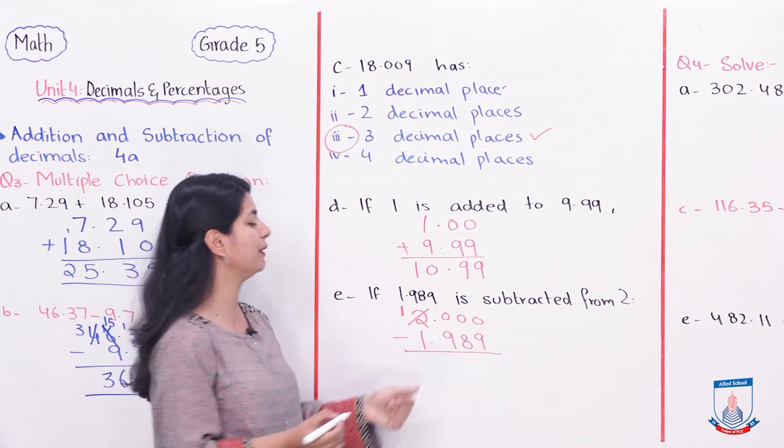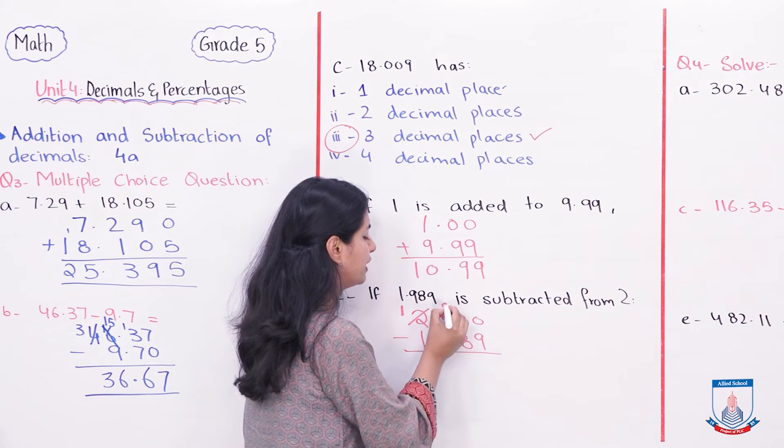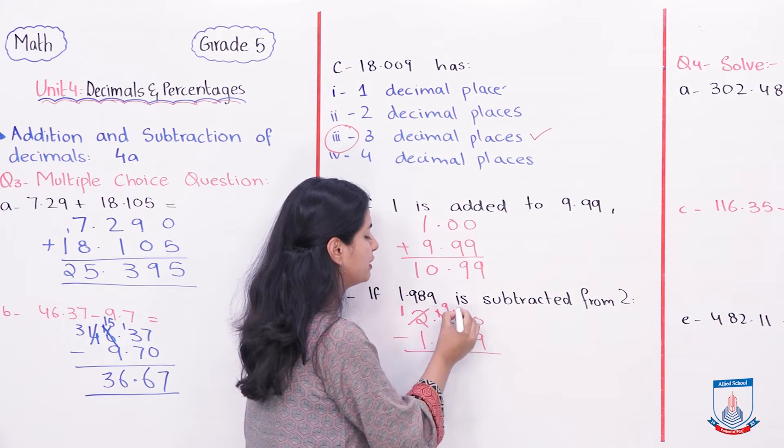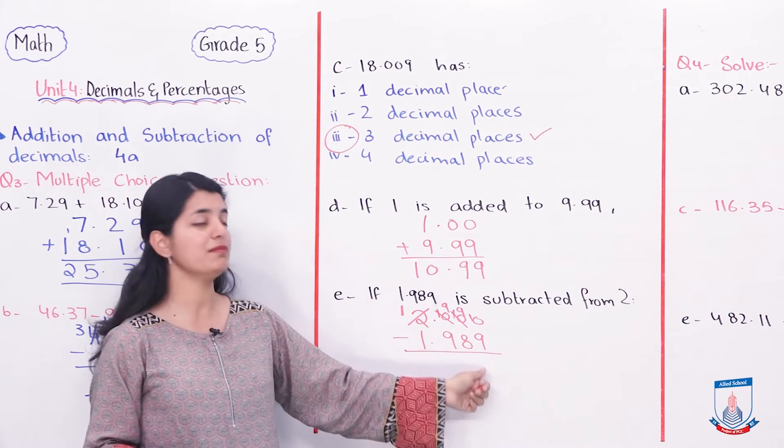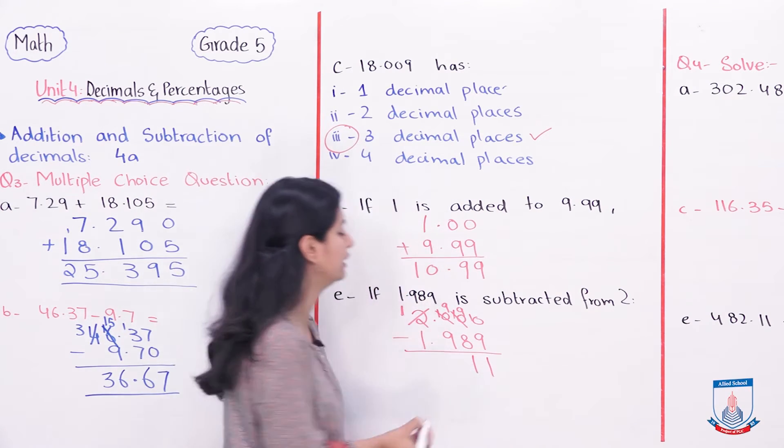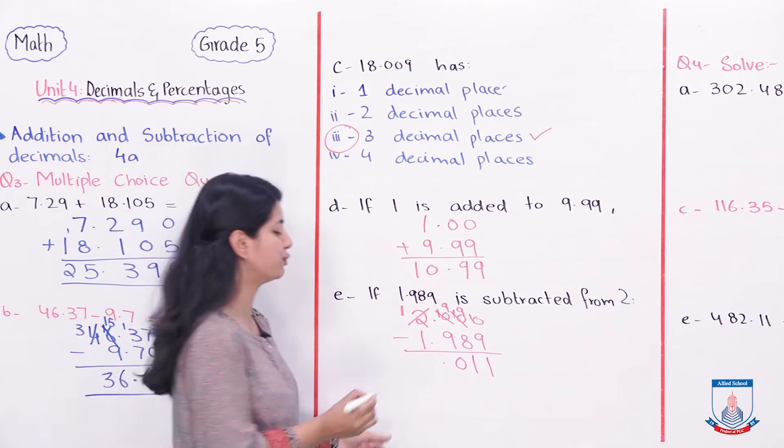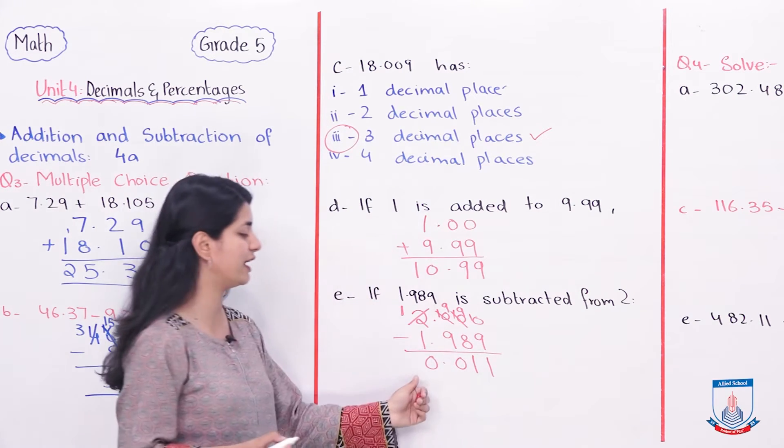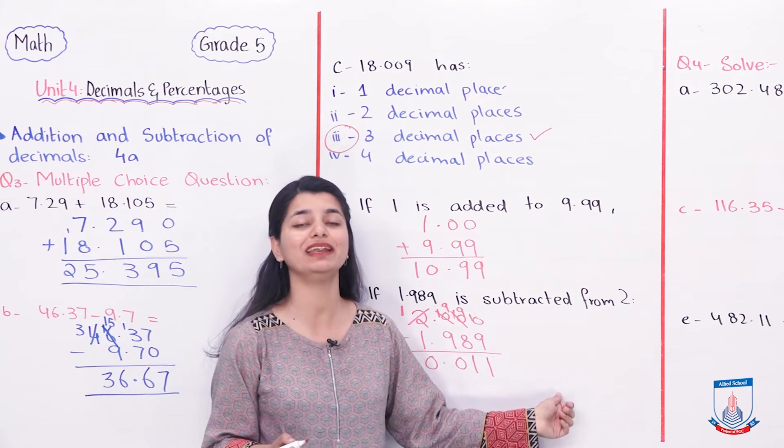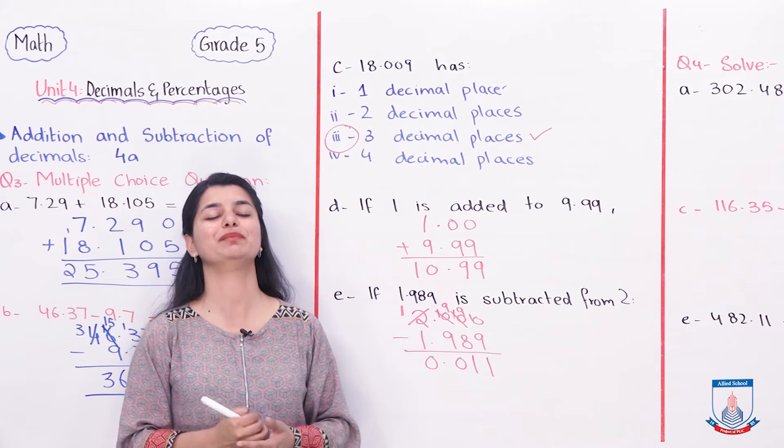Now I will carry 1 here, and then this will become 9. 1, this will become 9 and 1. 10 minus 9, 1. 9 minus 8, 1. 9 minus 9, 0. 1 minus 1, 0. So my answer is 0.011. You will select it from your options. And with that question number 3 will be finished. Now let's look at question number 4.